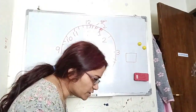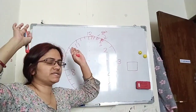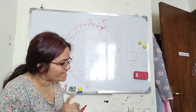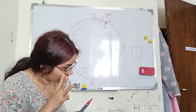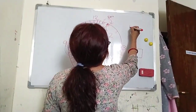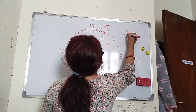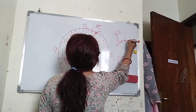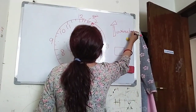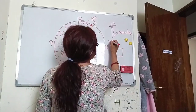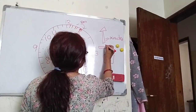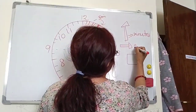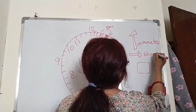Now let me tell you: what is the long hand, what is the short hand, and what is the thin hand? You know how many hands our clock has? Three. The first is the long hand — this is the long hand. Long hand means the minute's hand. Now the short hand — this is the short hand.